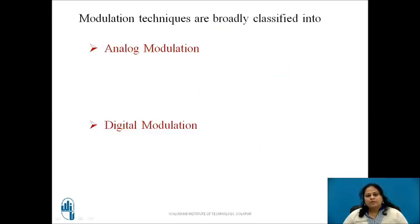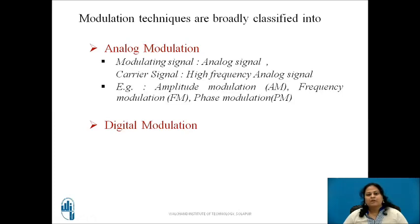There are two types of modulation techniques: analog modulation and digital modulation. In analog modulation, the modulating signal is a low frequency analog signal while the carrier is a high frequency sinusoidal signal. Examples of analog modulation are amplitude modulation, frequency modulation, and phase modulation techniques.